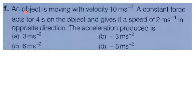Kinematics 4 to 4 problems. First problem: an object is moving with velocity 10 meter per second. A constant force acts for 4 seconds on the object and gives it a speed of 2 meter per second in the opposite direction. Find the acceleration produced.